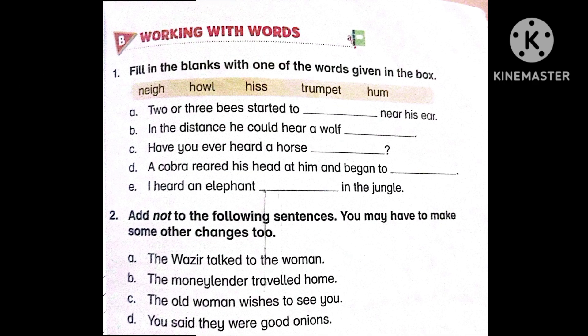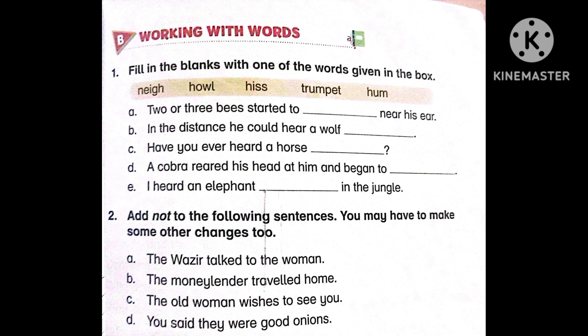The next section is Section B: Working with Words. Question number one: Fill in the blanks with one of the words given in the box. There are five words given and five blanks. We need to fill in the blanks with suitable words. The words are: neigh, howl, hiss, trumpet, and hum.